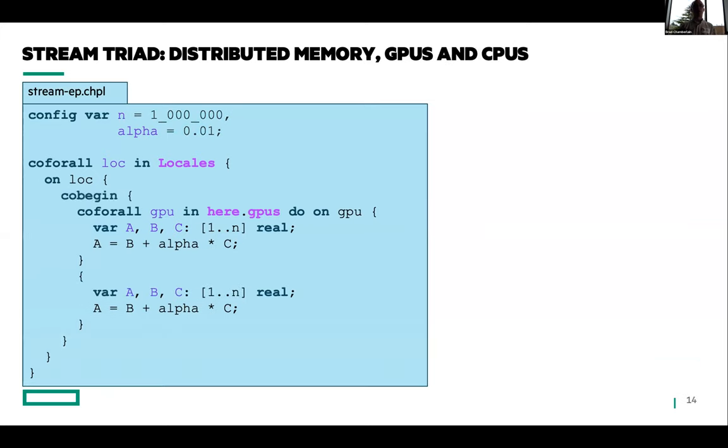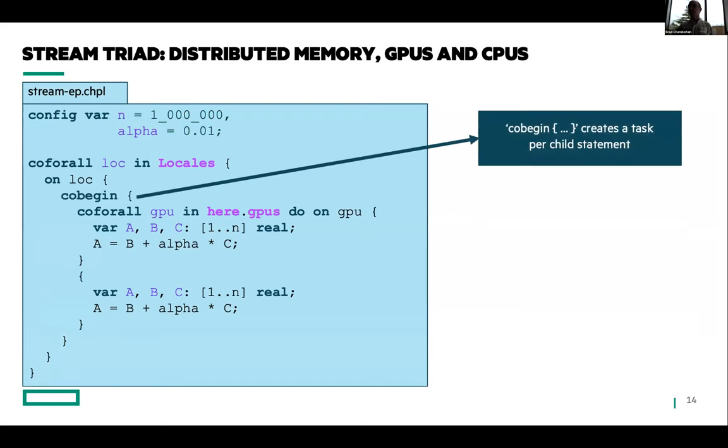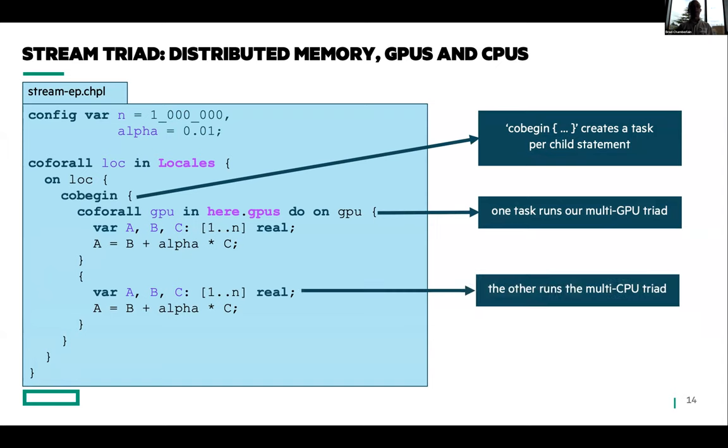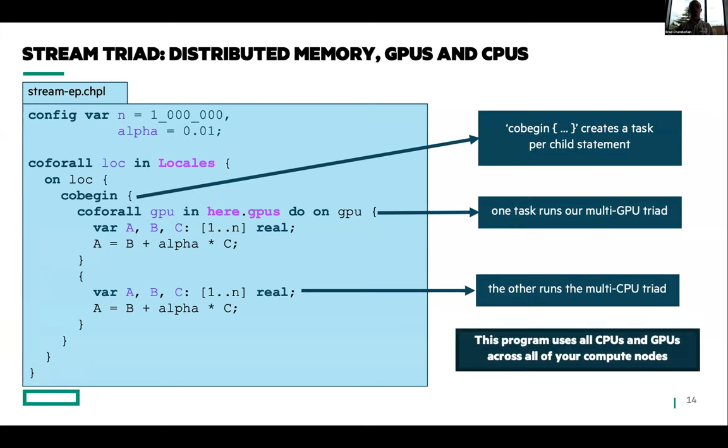But with a small change, I can use all of my GPUs and all my CPUs. I'm using this cobegin construct. This is a compound statement that creates a separate task for each of its child statements. So the first one is going to run my GPU loop across all my GPUs. The second statement is going to run my conventional stream triad across all my CPUs. And now I'm basically driving all of the CPUs and GPUs across my large parallel system. This is work that is fresh off the presses, just came out in the last release of Chapel.